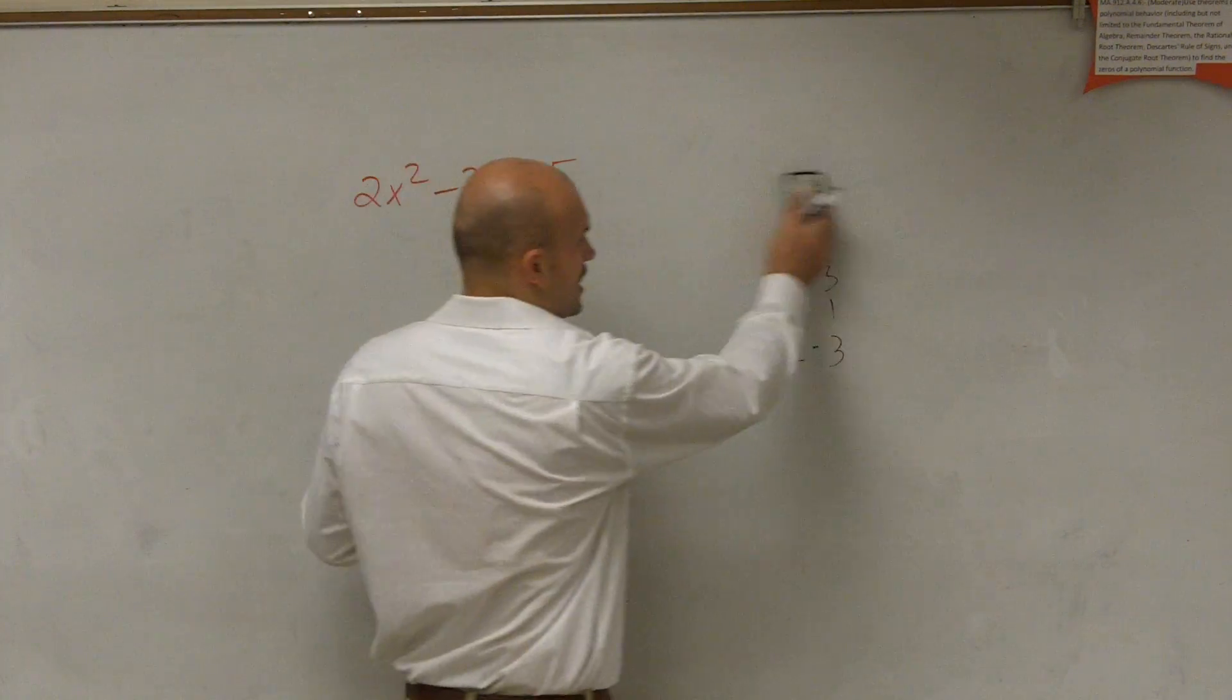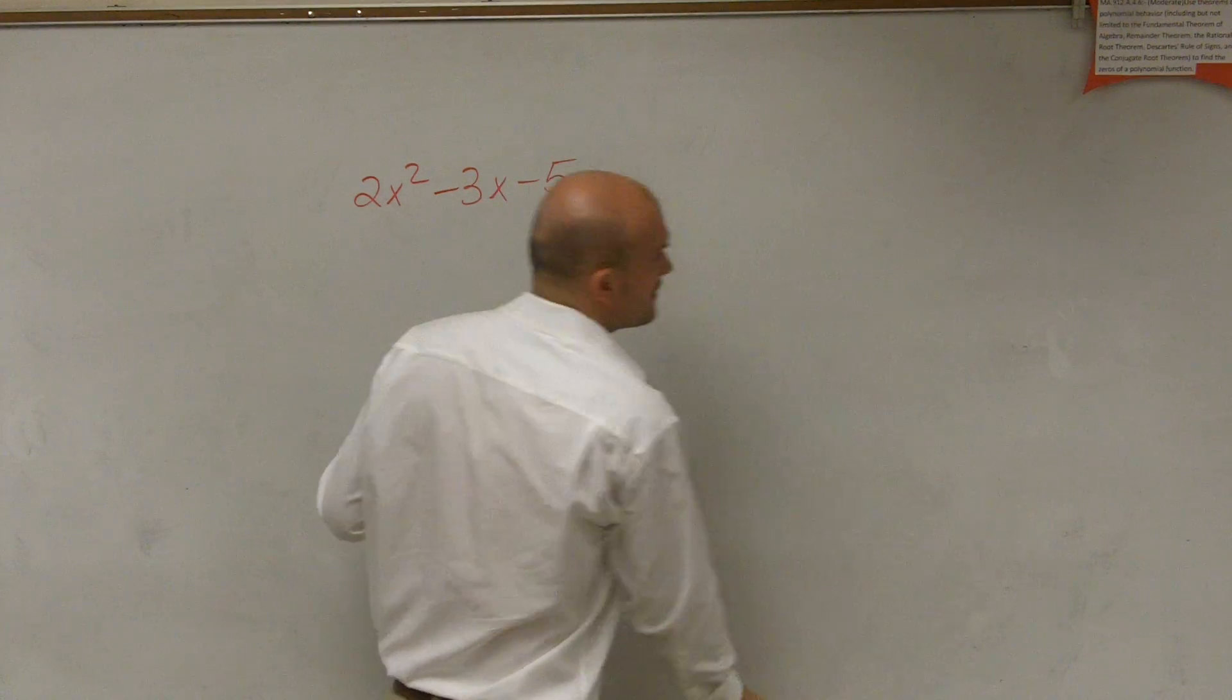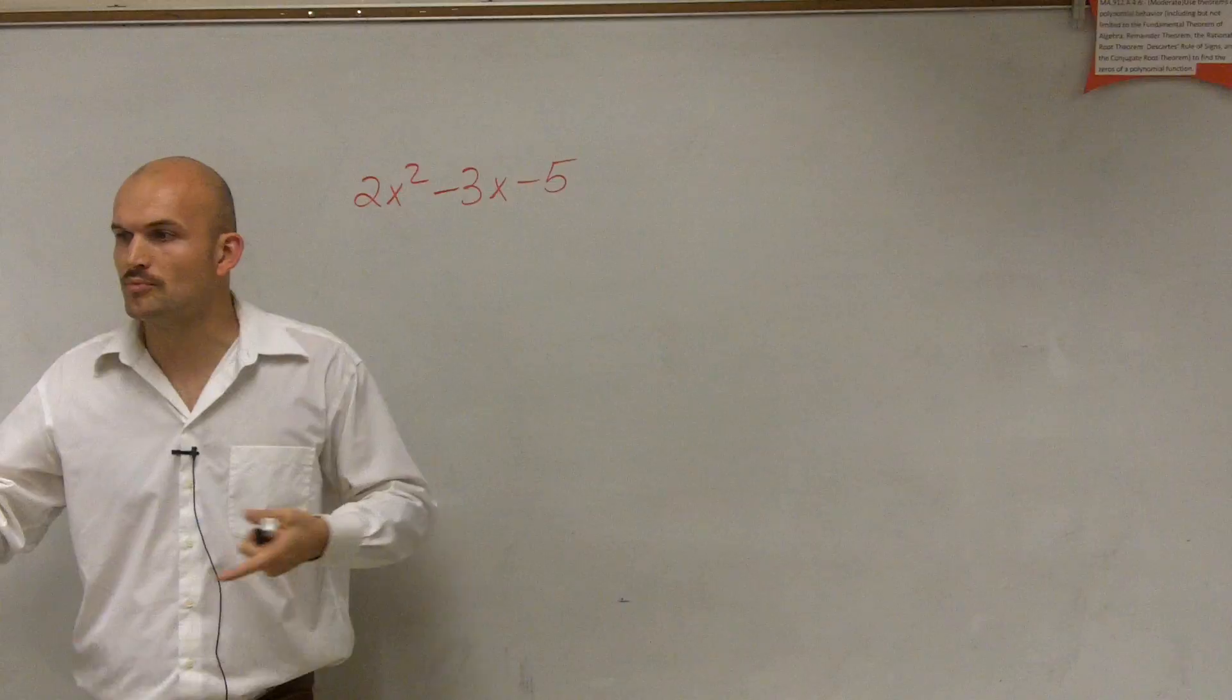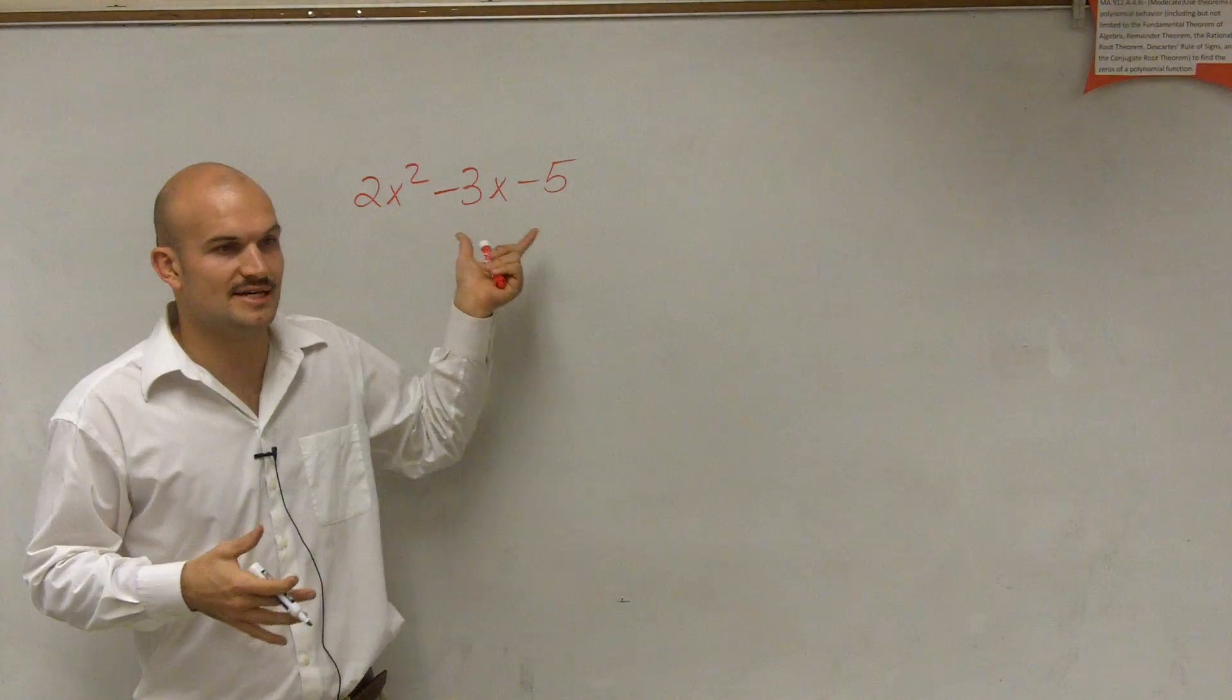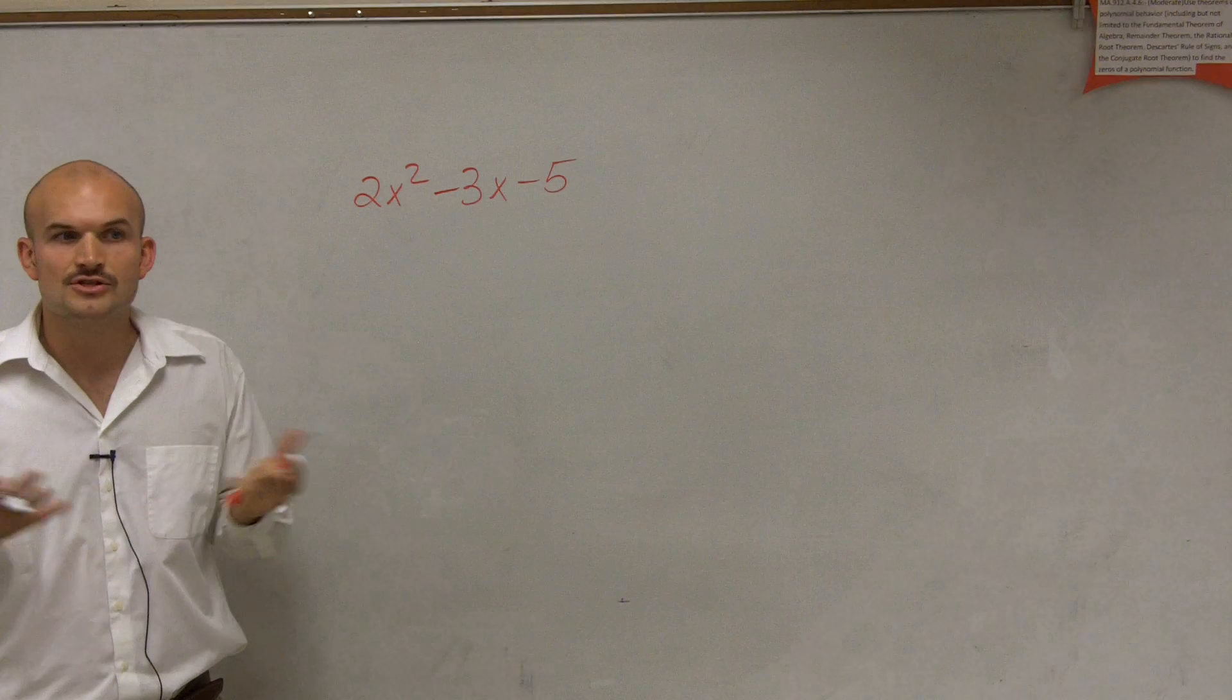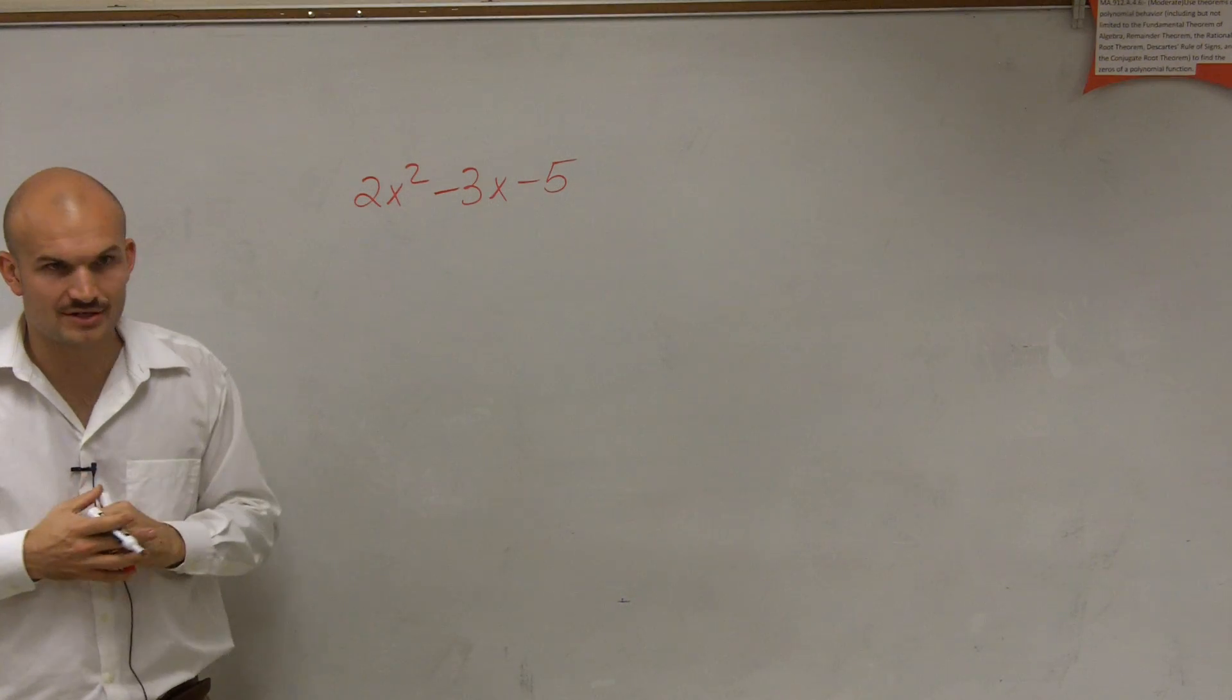And the reason why we want to use it as a multiplication problem is because when we got to solving, which we'll do an example of later, we want to use the zero product property. So we need to write this as a multiplication problem of its factors. So we need to determine what are the factors.